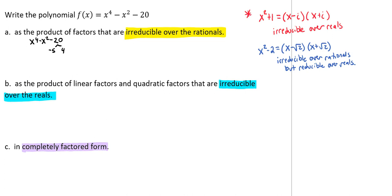We're looking for two numbers that will multiply to -20 and yet add to -1. Negative 5 and positive 4 will do that for us. So we can write this as (x^2 - 5)(x^2 + 4). It's x^2 because our original polynomial is x to the 4th power.